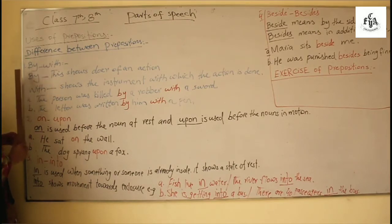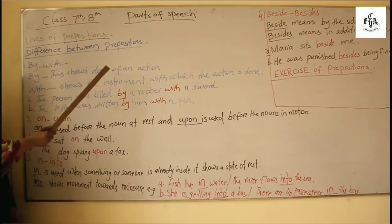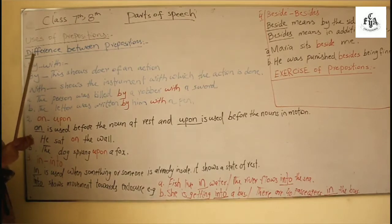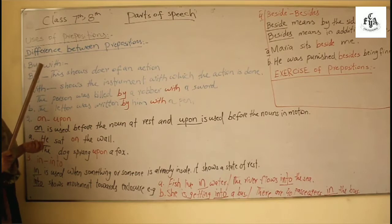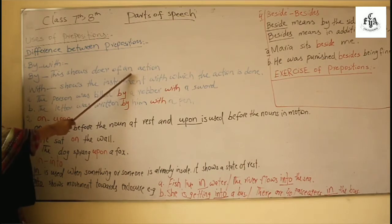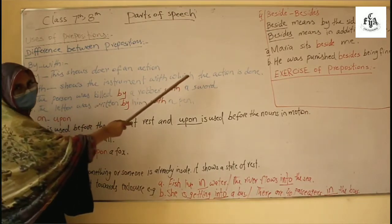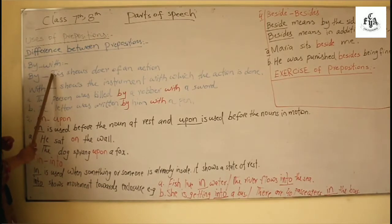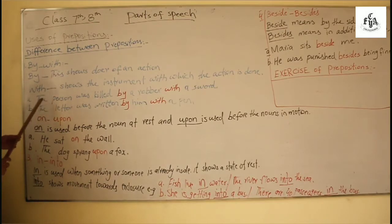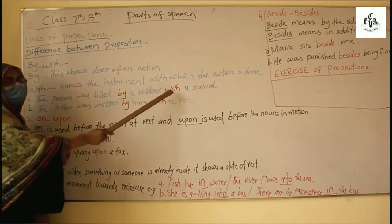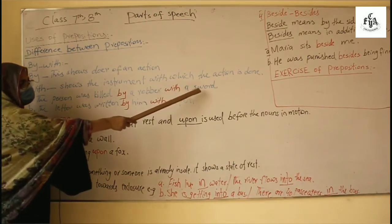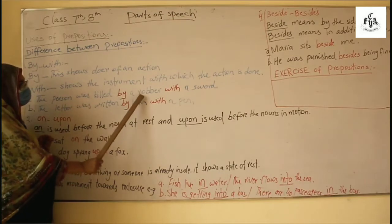Prepositions have no limit. Prepositions of direction and here are some same prepositions which shows the difference. For example by and with both show doer of an action and by is mostly used in passive voice sentences who did the action. For example the snake was killed by him. So by shows doer of an action but this is for person and which shows the instrument with which the action is done.